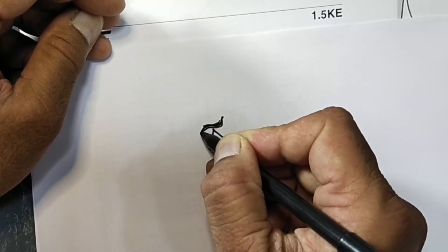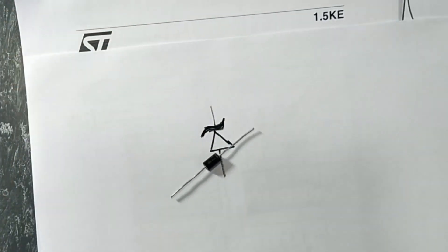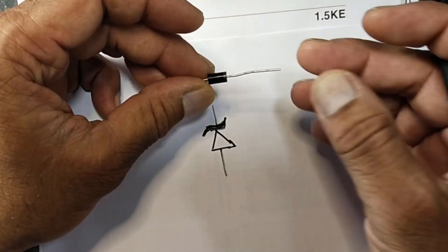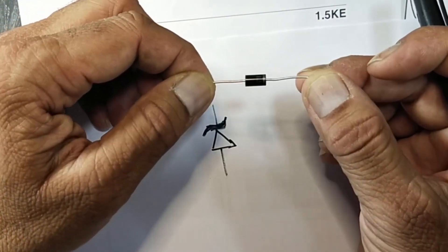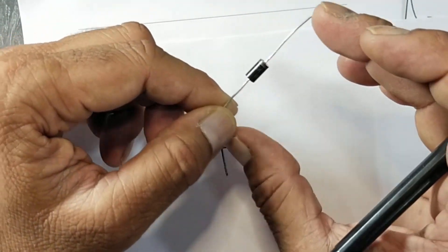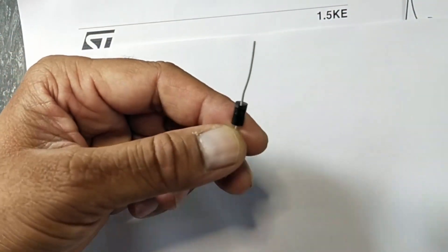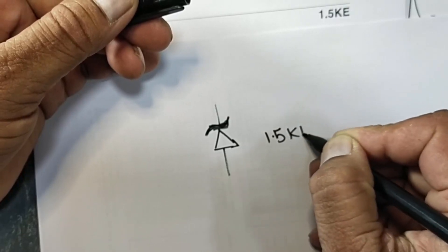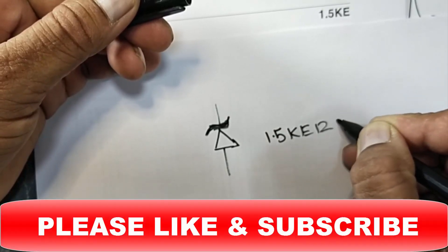These are in two types: unidirectional and bi-directional. Today we are going to discuss unidirectional, so this diode 1.5KE12A.